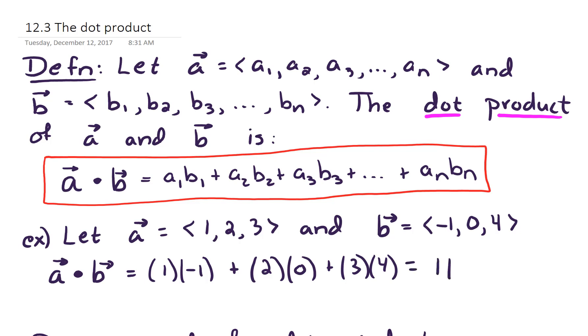So one thing to notice about the dot product is that it always produces a scalar quantity, like a number, like 11 or 5, something like that. So we take in two vectors, and what comes out is some number.